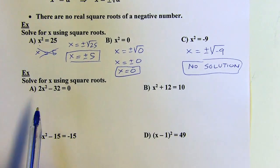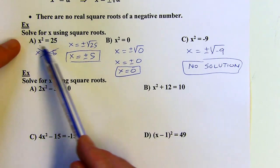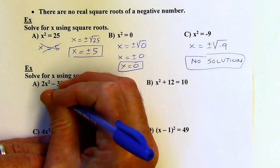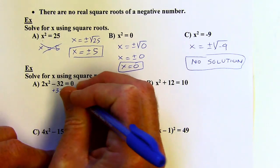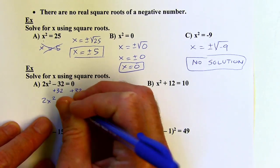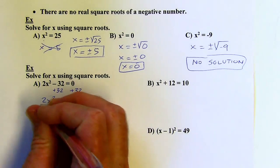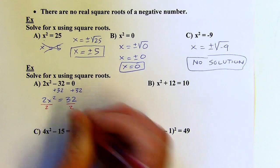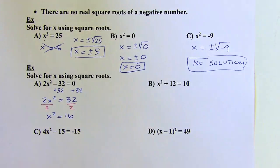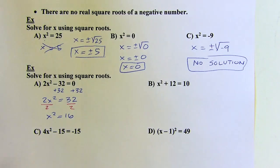Let's solve these with square roots. The idea is that we want to first isolate the x squared so it looks like the examples above. I'm going to start by adding 32 to both sides to isolate the 2x squared. Now 2x squared equals positive 32, and then I want to divide by 2 to isolate x squared. So x squared equals 16.